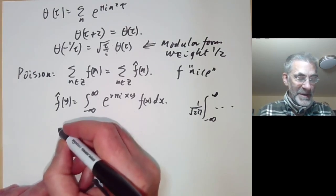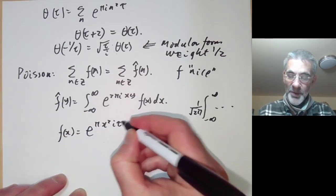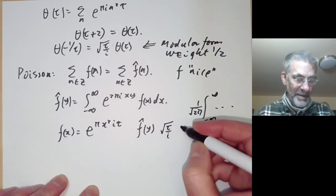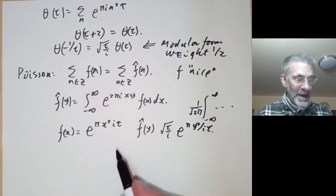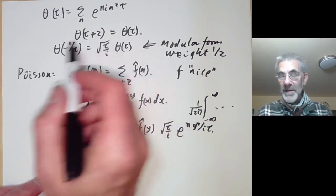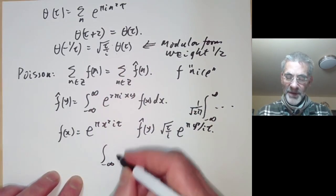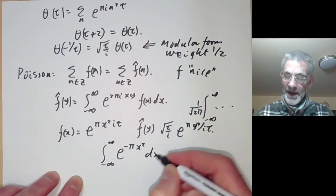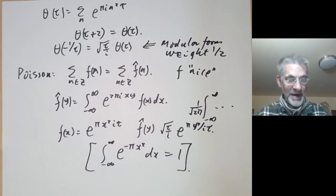We take f of x equal to e to the pi x squared i tau, and then its Fourier transform should be root tau over i times e to the pi y squared over i tau. Sticking this into the Poisson summation formula immediately gives the transformation formula for the theta function, using the well-known fact that the integral from minus infinity to infinity of e to the minus pi x squared dx equals 1.